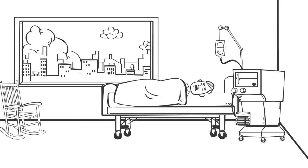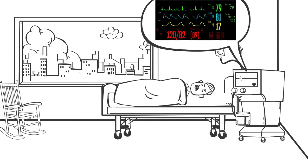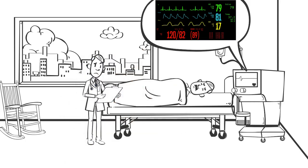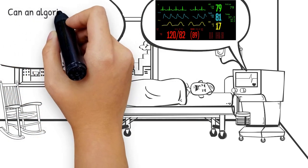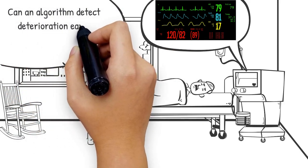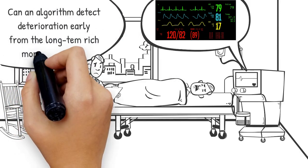In practice, however, the monitor can only show values within the last 30 to 60 seconds. So a doctor usually makes decisions only based on short-term observation of the monitor and the nurses' notes. So the problem is, can an algorithm detect deterioration earlier from the long-term rich monitoring data?